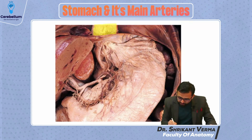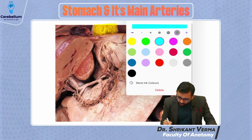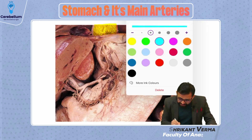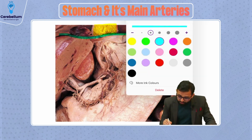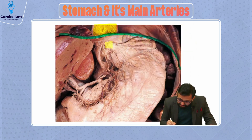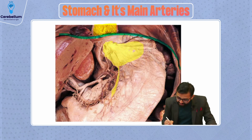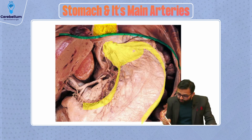This is the lower end of the esophagus. Here you can observe this is our diaphragm portion. Now you can observe this is our cardiac part, or esophagus part of the stomach. Here is the lesser curvature and you can observe this is our greater curvature of the stomach.